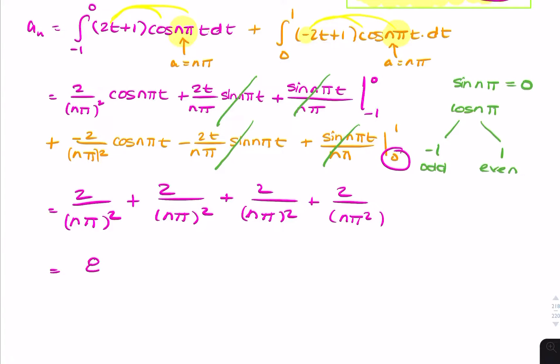So that gives you 8 over n pi squared. This is for n odd. So if n is even, you get 0, and the reason you'd get 0 is you would have a minus here and a minus here.